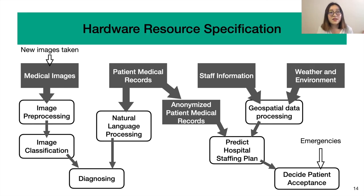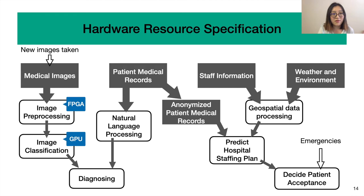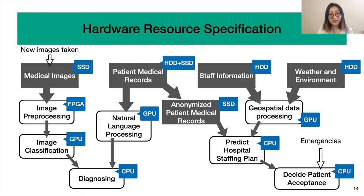Next, the IT team can specify the hardware type they want to use for each module. For example, they can say that image preprocessing should happen on FPGAs and image classification should happen on GPUs, and similarly for other modules. In addition, they can specify the amount of resources each module is designed to use. If they don't specify that, then the provider would figure it out automatically.